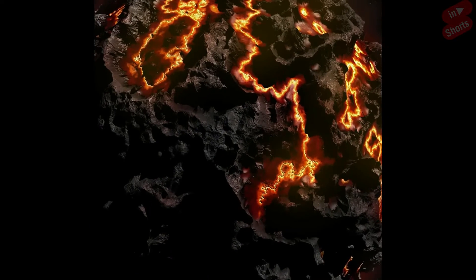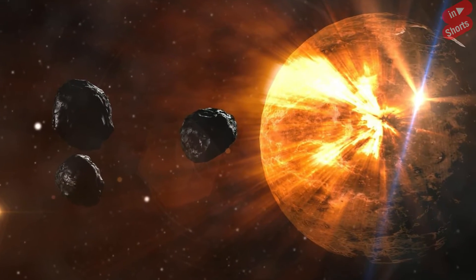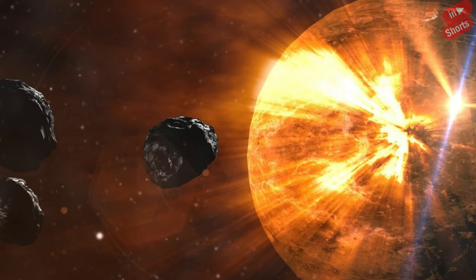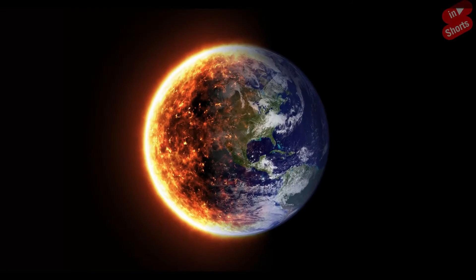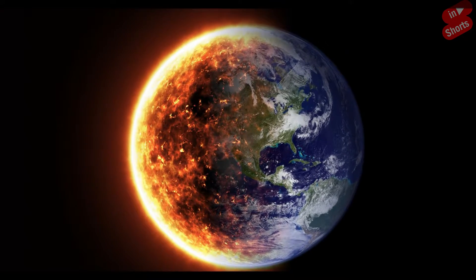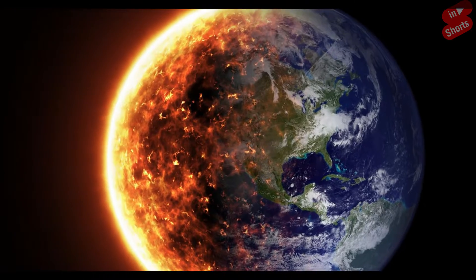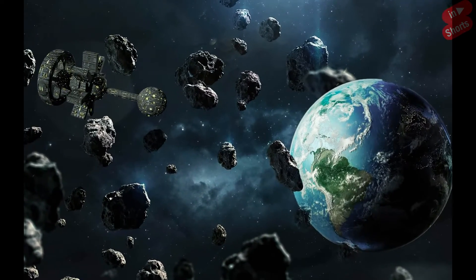As per the estimation, based on the Big Bang theory, our Earth has around 4.5 billion years of life to go. This can be achieved only when there are no external disturbances in the day-to-day life of the Earth or our solar system.